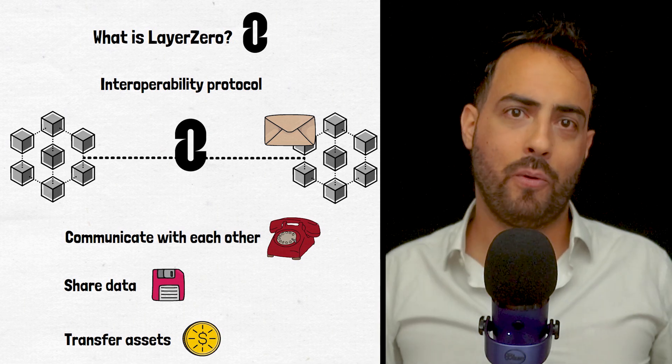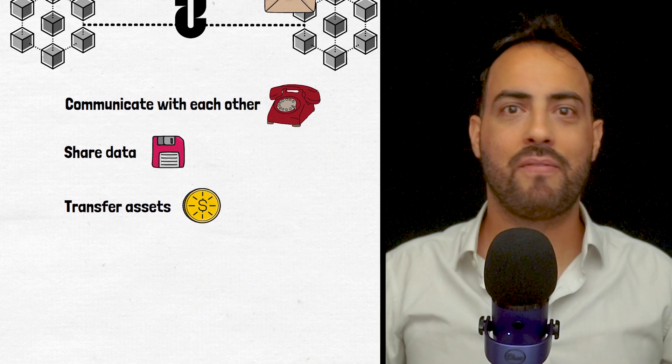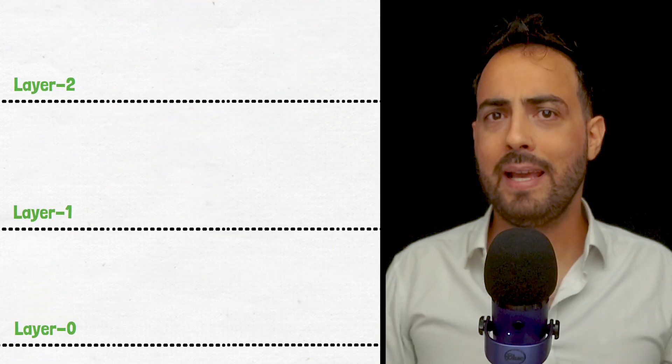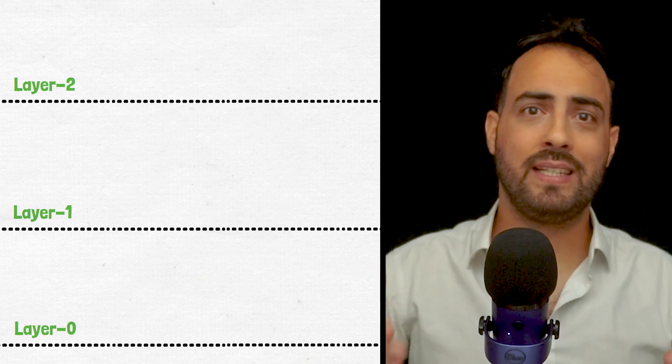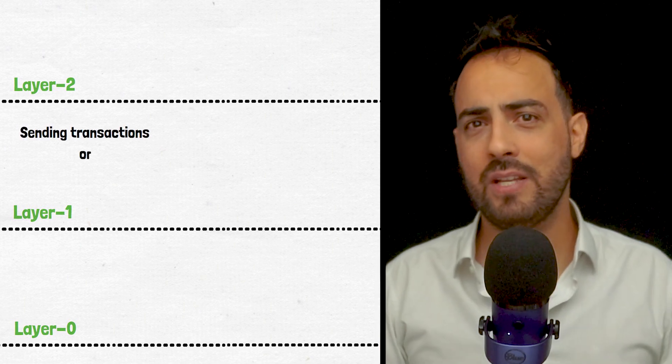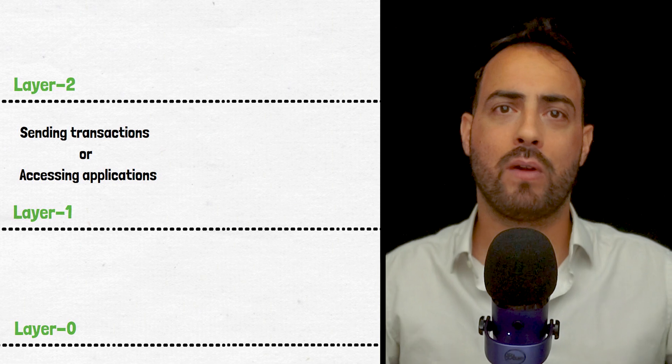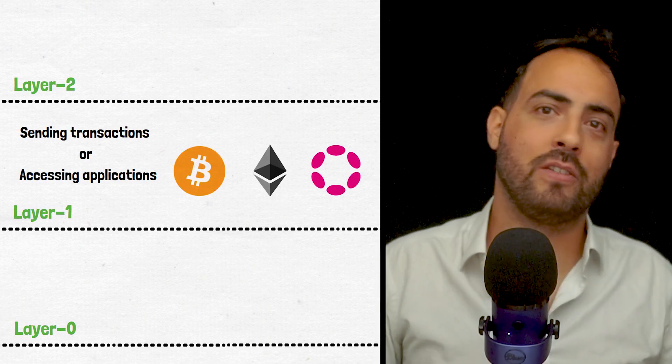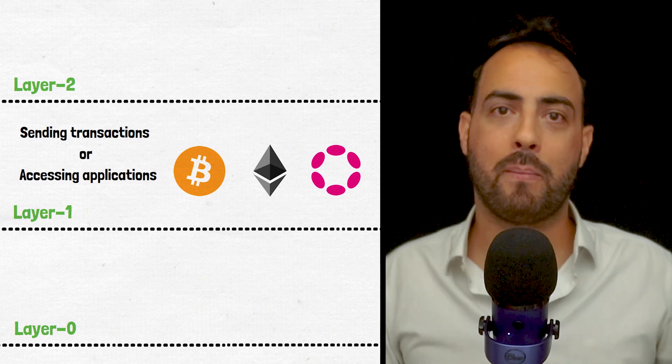To help illustrate the point, the name Layer 0 refers to its place in a blockchain network's infrastructure. Typically, the blockchain you use for sending transactions or accessing applications is known as a Layer 1 platform. So platforms like Bitcoin, Ethereum, Polkadot, etc. are all Layer 1 platforms.